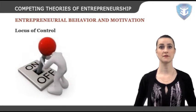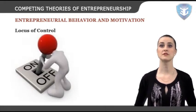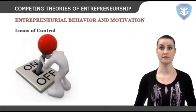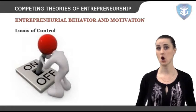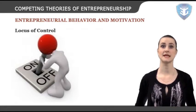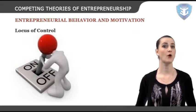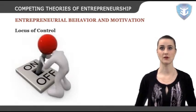Locus of control — people with an internal locus of control are those individuals who believe themselves to be in control of their destiny. In contrast, people with an external locus of control sense that fate in the form of chance events outside their control, or powerful people, has a dominating influence over their lives.